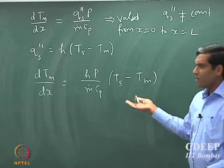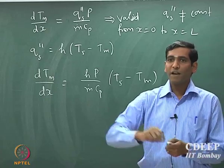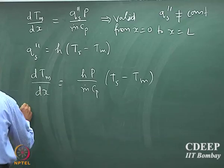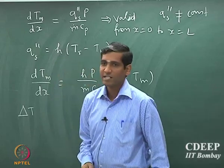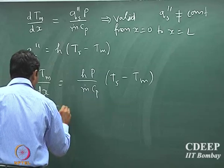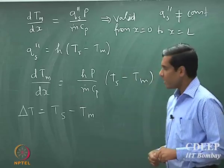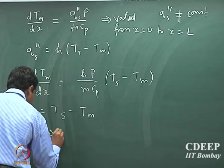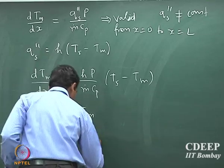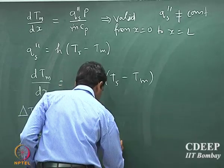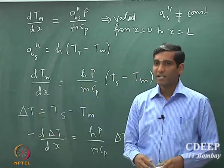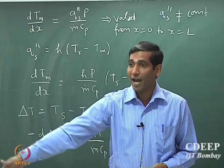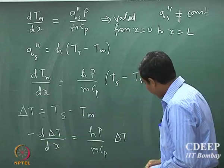If we integrate this expression we should be able to find the profile of the mixing cup temperature. We are going to define a variable called delta T — delta T is the temperature difference, specifically delta T equals Ts minus Tm. I can replace the whole expression in terms of delta T. There is a specific reason why I call it delta T, which you will see shortly and how it connects with experiments performed in the lab.